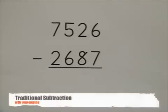I'd like to do a quick review of the traditional subtraction algorithm with regrouping. Looking at this problem, we have 7,526 minus 2,687.